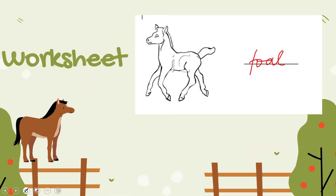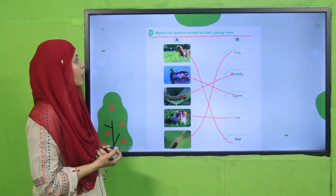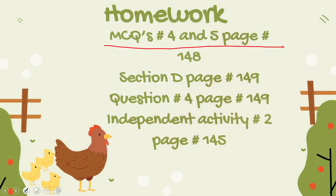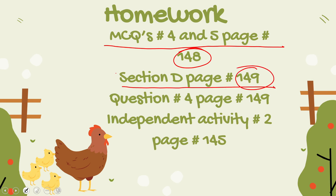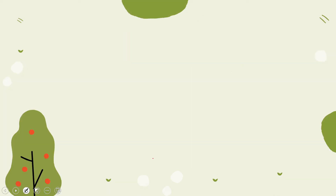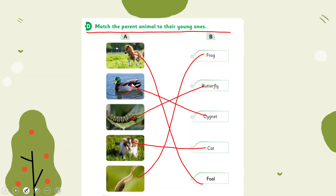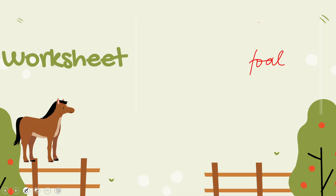Now quickly note down your homework. You will do MCQ number four and five given on page number 142. You will also do Section B, question number four, given on page number 149. Also do independent activity number two given on page number 145. These are the two MCQs and a match-the-column exercise that you have to complete in your books.